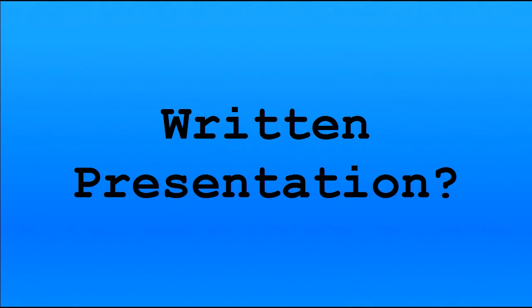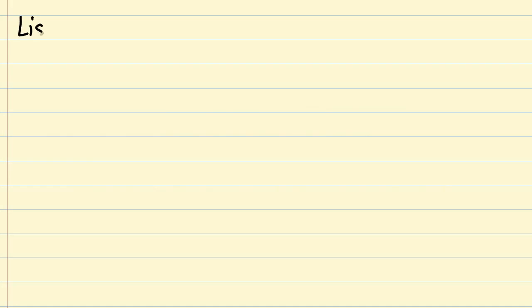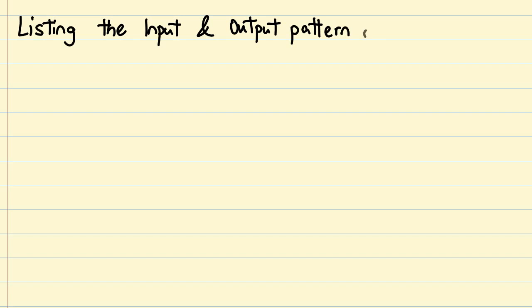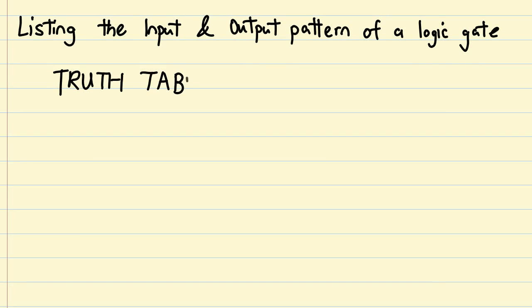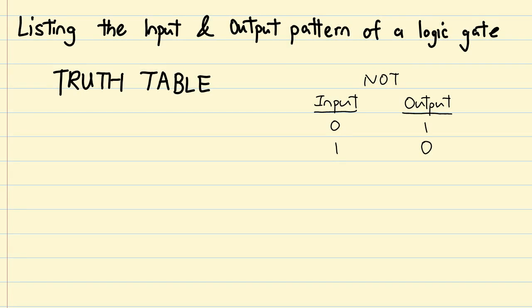So far so good, but how do you present this on paper? Surely there's a way to present a logic gate's input and output pattern in writing. Well, turns out there is, in the form of what's known as a truth table. What you're seeing on screen is a truth table for the not gate.